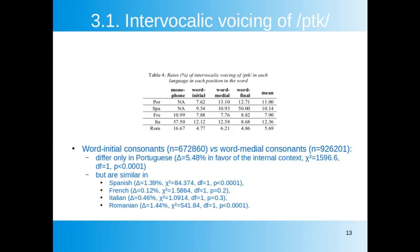In Table 4, Portuguese displays a fair amount of intervocalic voicing when the consonant is word-internal or word-final, but less when it is word-initial. Spanish consonants voice a lot word-finally, but this ratio stems from the observation of only six tokens; in word-initial and word-medial positions, rates of voicing are similar. French has generally similar rates of voicing across all positions, although monophones and, to a lesser extent, word-final consonants voice more than the mean, while the word-internal context voices the least, which is surprising.